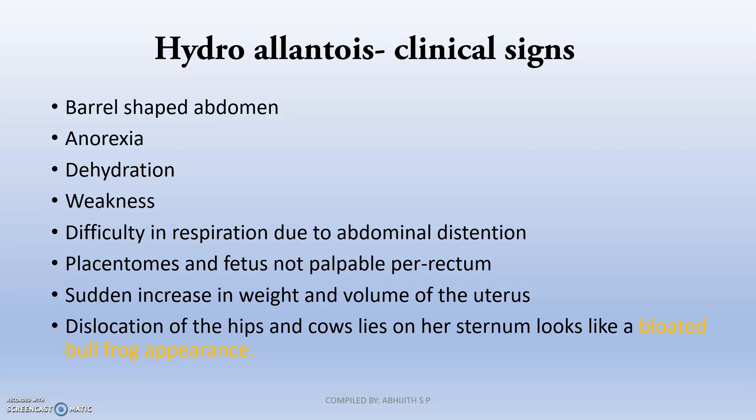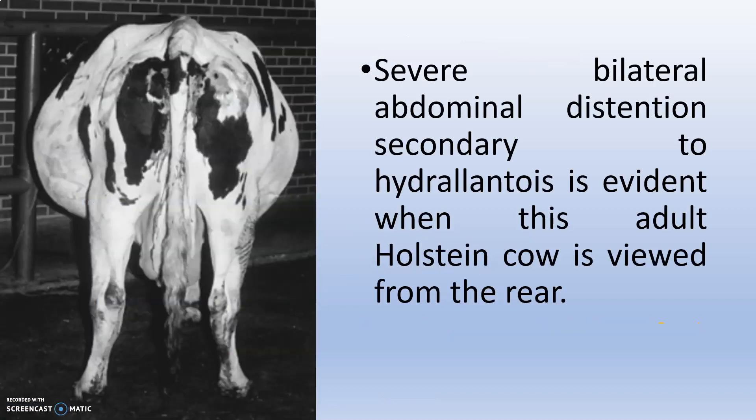Placentomes and fetus are not palpable per rectum. There is sudden increase in weight and volume of the uterus due to excess fluid accumulation. Due to the weight of the uterus, there will be dislocation of the hips and the cow will lie on her sternum — this looks like a bloated bullfrog appearance. This is a very important question asked in many MCQ examinations. Severe bilateral abdominal distension secondary to hydroallantois is evident in this barrel-shaped appearance.